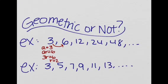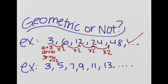So 3 times 2, is that equal to 6? Yes. 6 times 2, is that equal to 12? Yes. 12 times 2, is that equal to 24? Yes. 24 times 2, is that equal to 48? Yes. So this is a geometric sequence.